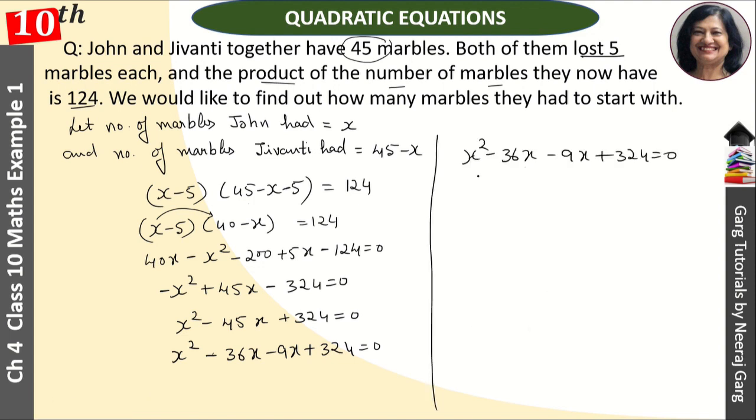Now we have to see what is common. x is common. So inside x minus 36, and minus 9 is common. Inside x minus 36. That is equal to 0.